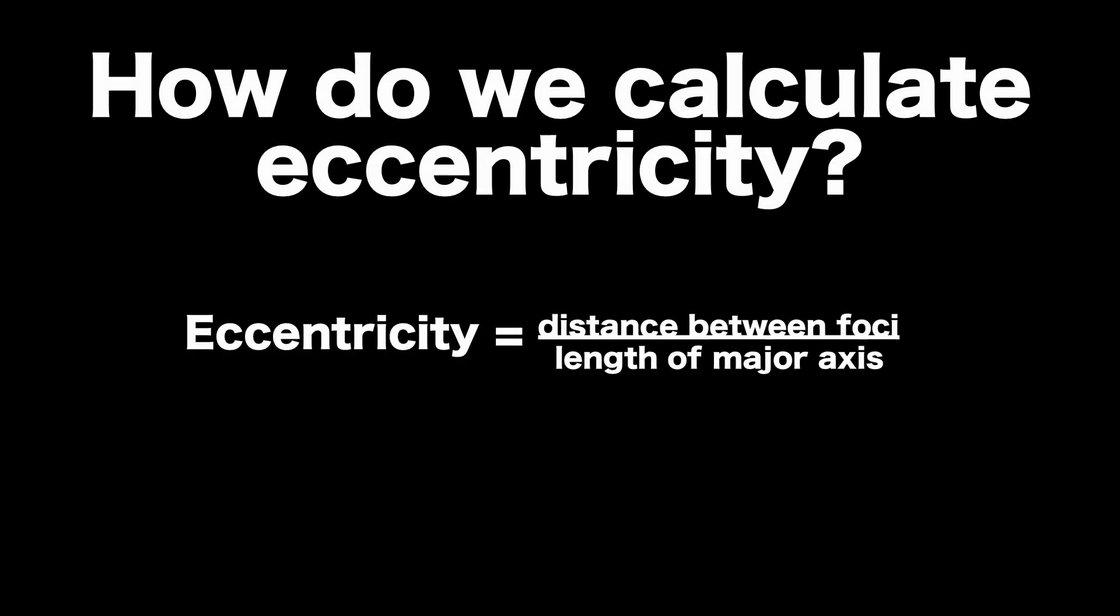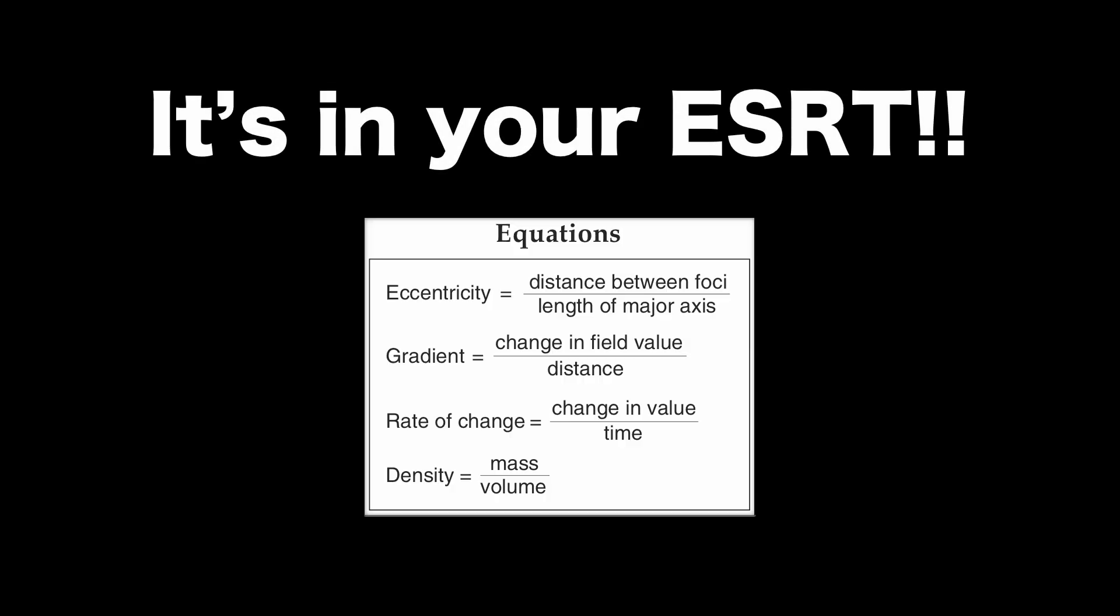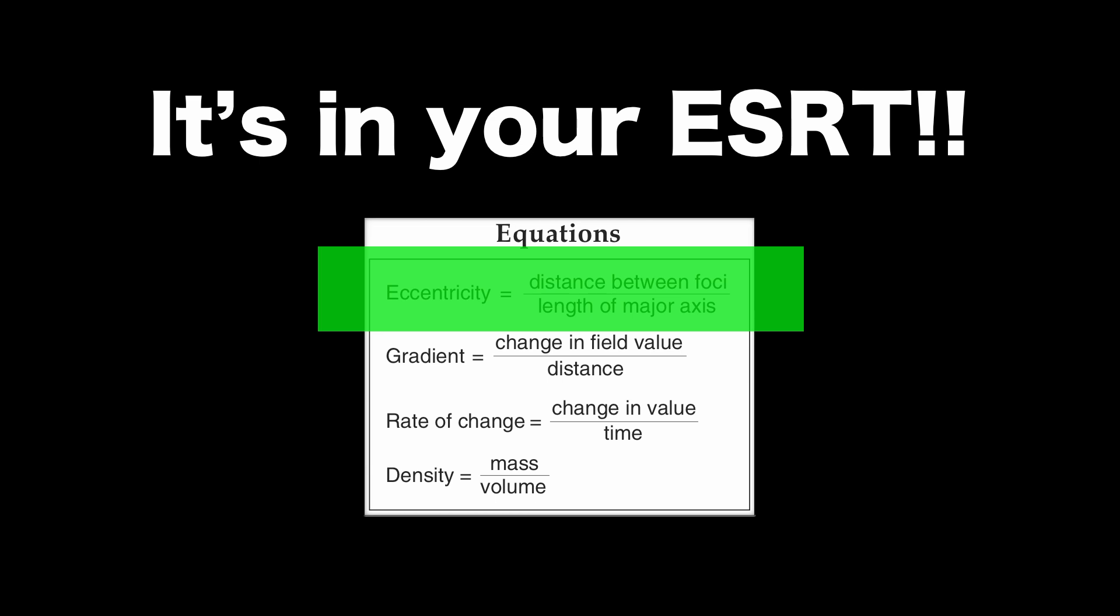So we calculate it by measuring the distance between your focal points divided by the length of your major axis. Now this is a formula you never have to memorize because it's in your reference table. And it's going to be the first formula or first equation that's going to be listed there. So distance between your foci divided by the length of your major axis.